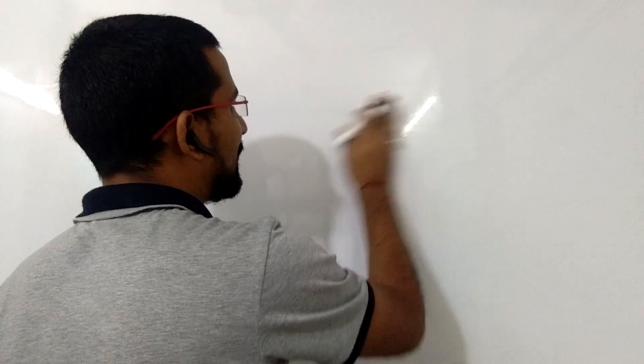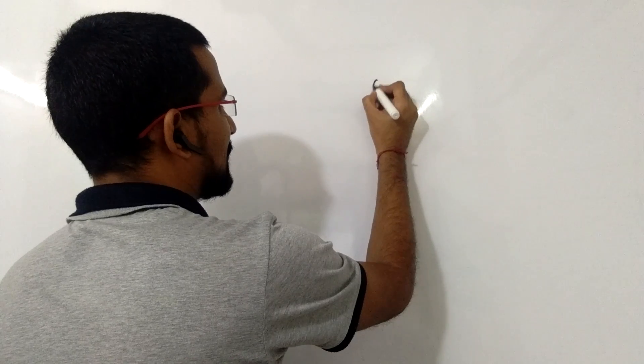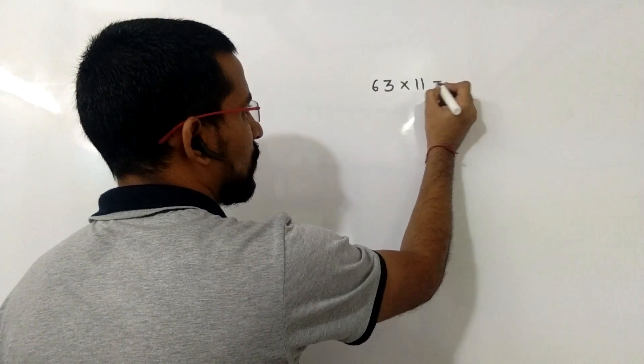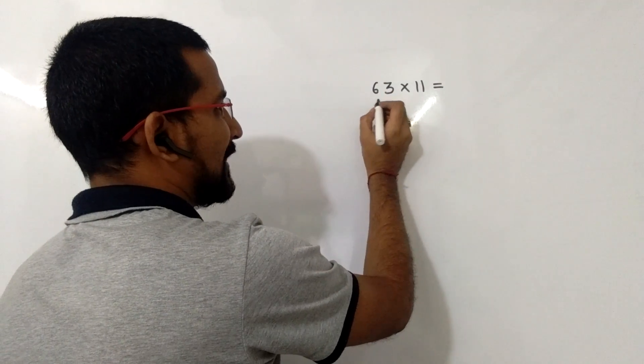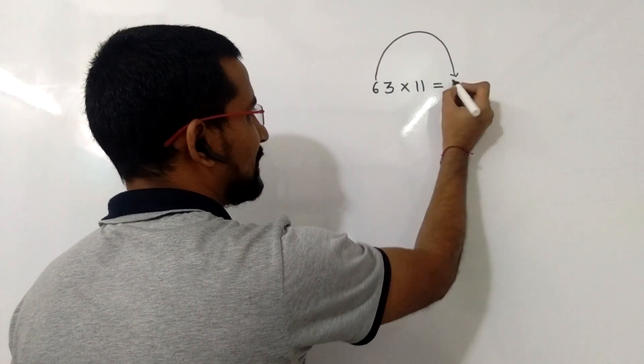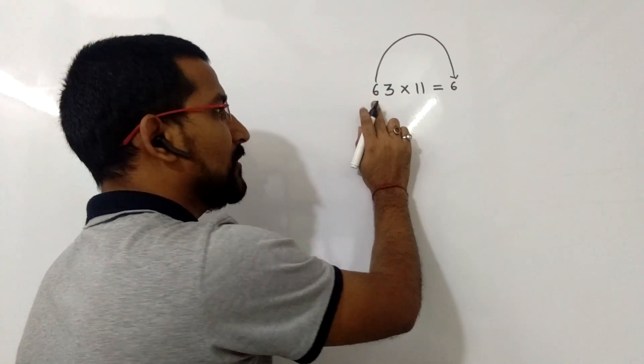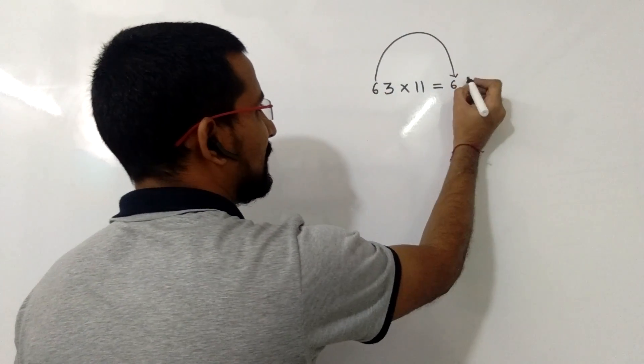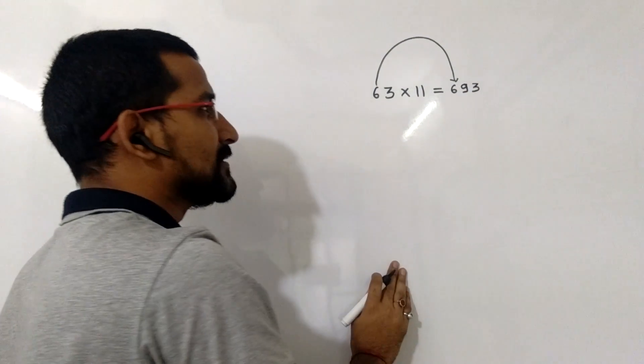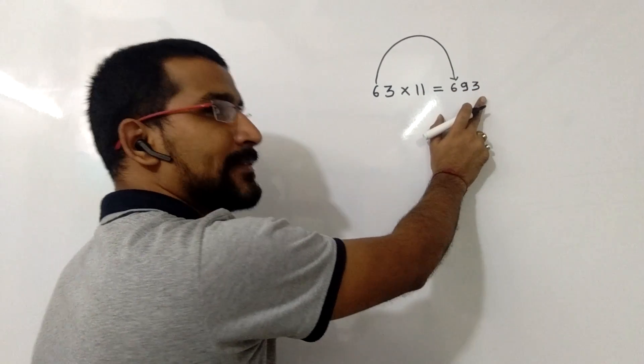For example, you want to multiply 63 with 11. So what will be the answer? In this trick, we will write the first digit as it is, that is 6 here. And now 6 plus 3, that is 9, and the last digit will be as it is. So the answer is 693.